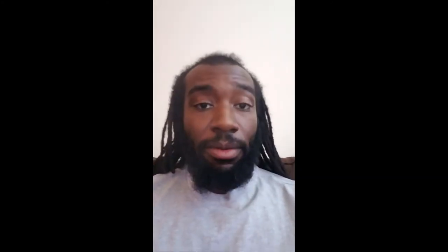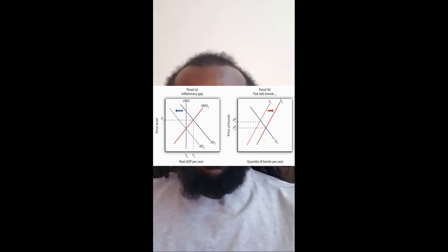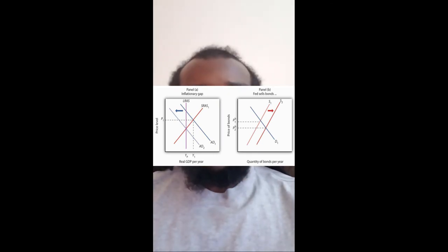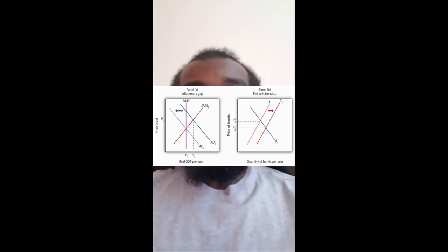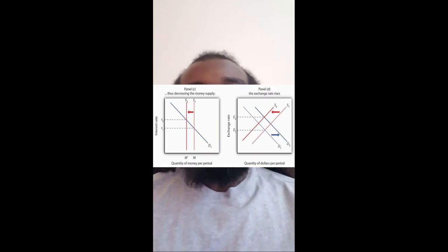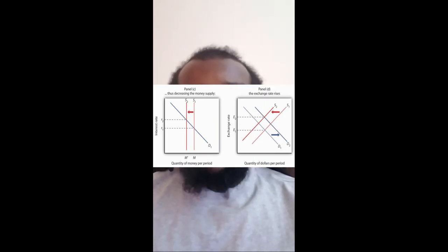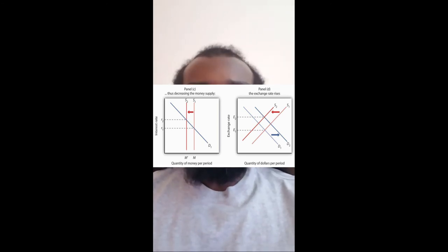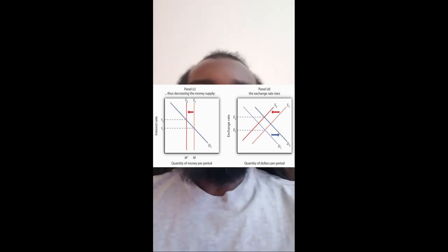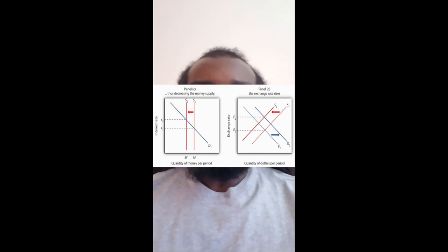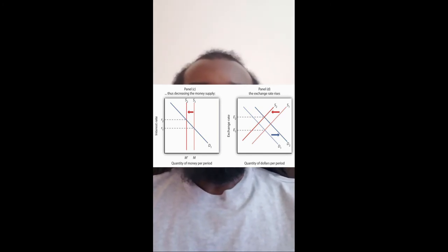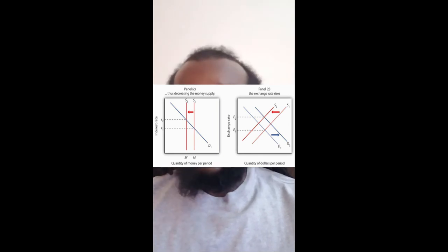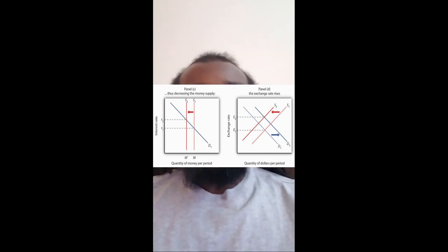The opposite can be done as well. The Fed can sell bonds, which increases the supply of bonds, thereby dropping the price and increasing the interest rate. At the same time, less cash would flow through the economy and less would be multiplied by the banks, decreasing the money supply and putting further upward pressure on interest rates. This closes inflationary gaps between potential output and the economy in the short run, and increases our exchange rate.